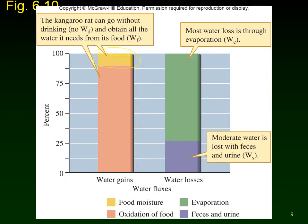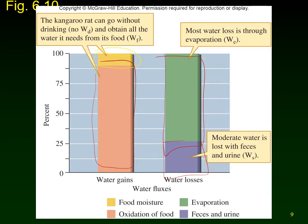All their water comes from a small amount of moisture in food, and the majority from oxidation of food — getting water out of the molecules as they break them down. They lose water through concentrated, crystallized urine and feces, and most water loss is through evaporation. Being nocturnal, when sleeping in burrows during the day they store seeds nearby; the seeds absorb water vapor they breathe out, so when they wake up they eat the seeds and get that water right back.